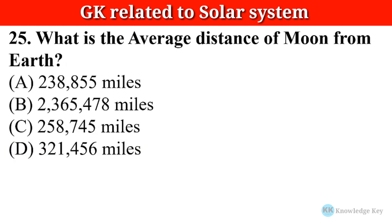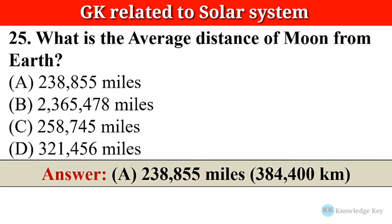Question number twenty-five: What is the average distance of Moon from Earth? The correct answer is option A — 2,38,855 miles, which is equal to 3,84,400 kilometers.